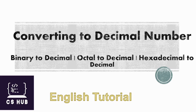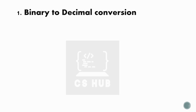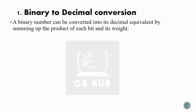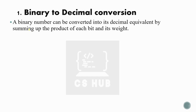Let's start with binary to decimal conversion. A binary number can be converted into its decimal equivalent by summing up the product of each bit and its weight. This is the exact method used across all number systems to convert into decimal — we find the product of each binary digit and its weight, then sum those products.